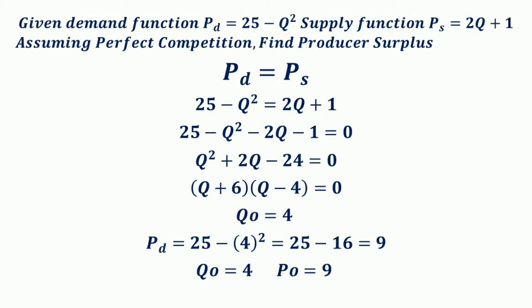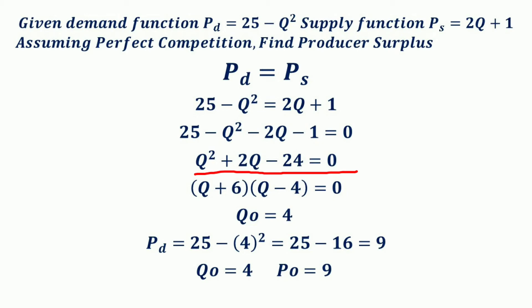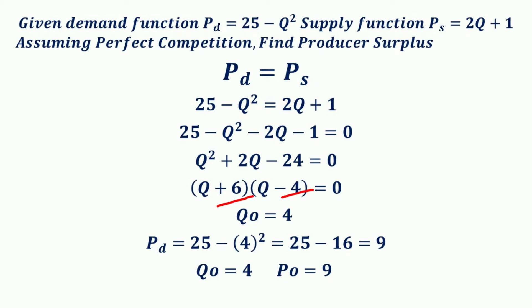Taking all terms to the left-hand side and equating with 0 gives: 25 − Q² − 2Q − 1 = 0, which simplifies to Q² + 2Q − 24 = 0. Using factorization, this becomes (Q + 6)(Q − 4) = 0, so Q = −6 or Q = 4. Since Q = −6 represents a negative quantity, we take Q = 4.